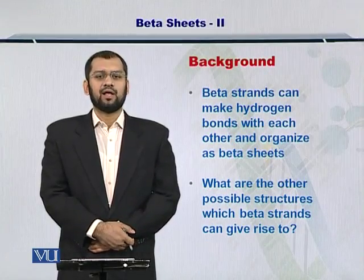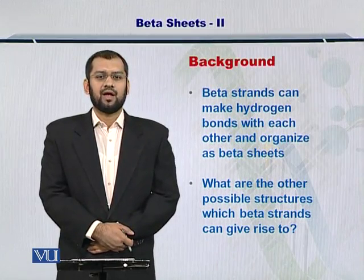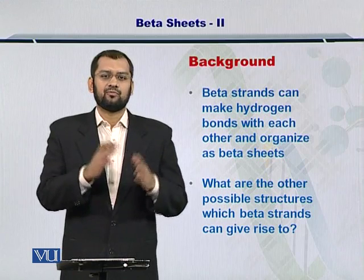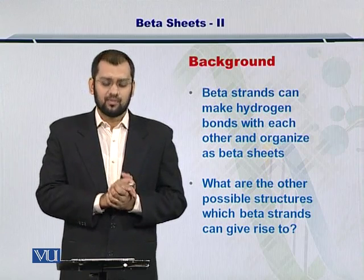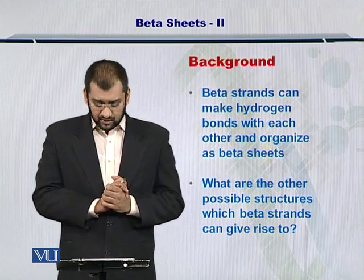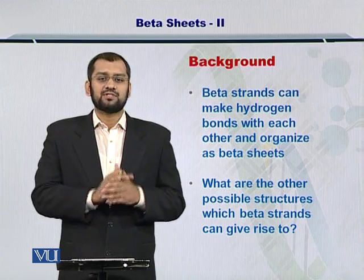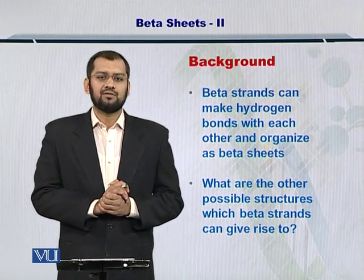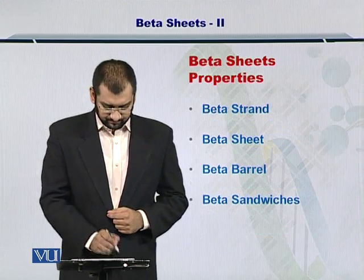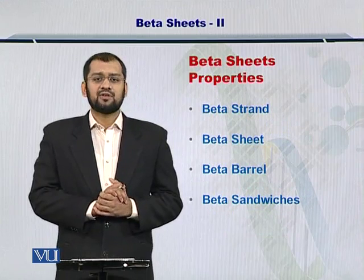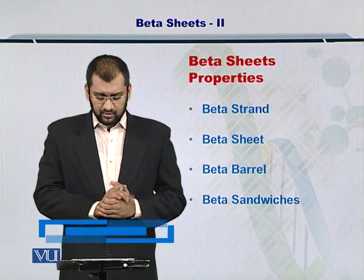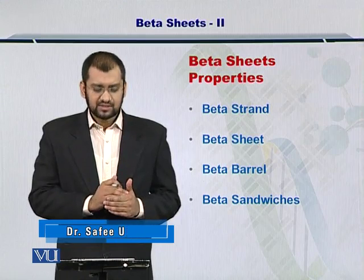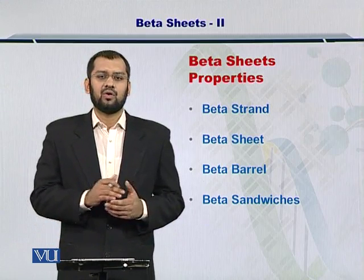Beta sheets are formed with the help of beta strands that come together and are about 5 to 6 amino acids in length at least, and they come together with other strands to form a beta sheet. The other possible structures which beta strands can give rise to are beta barrels and beta sandwiches. The beta strand gives rise to the beta sheet, and the beta sheet may give rise to a beta barrel or a beta sandwich.